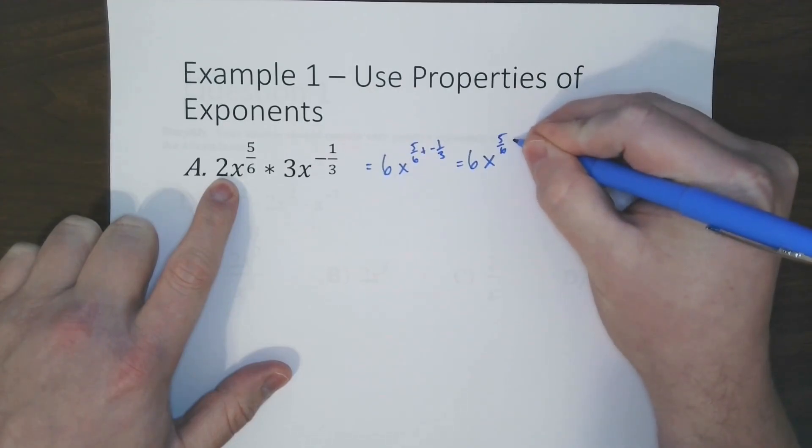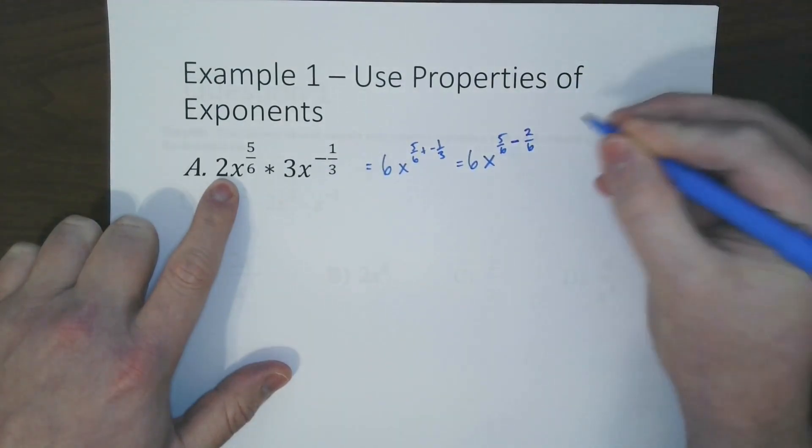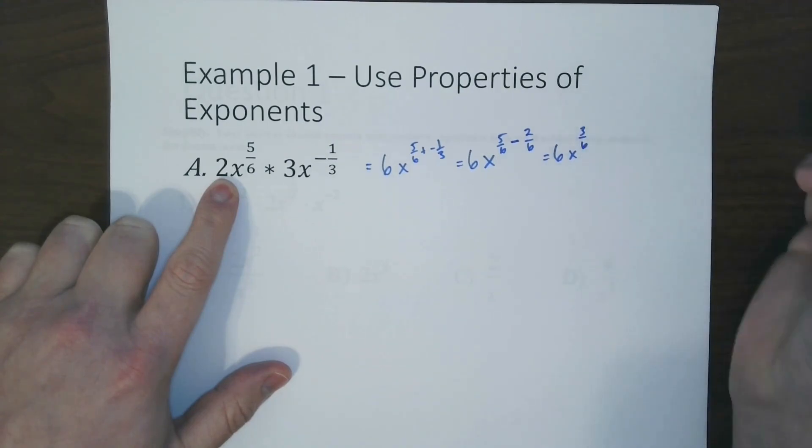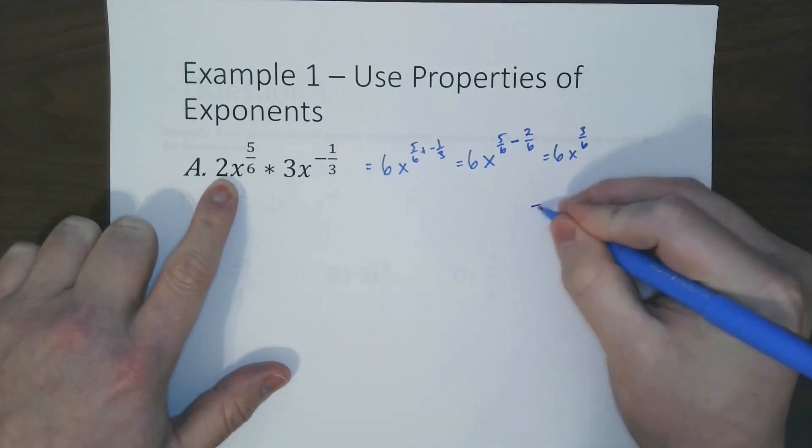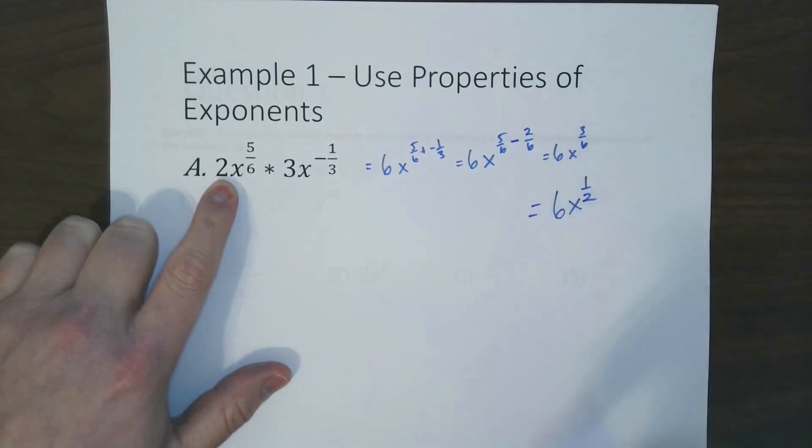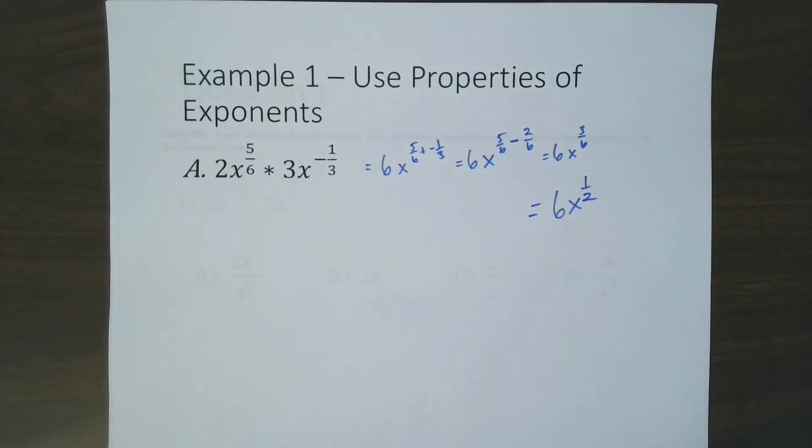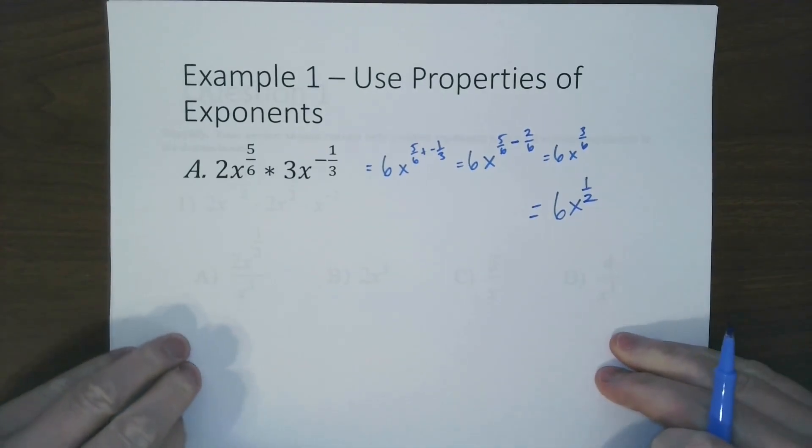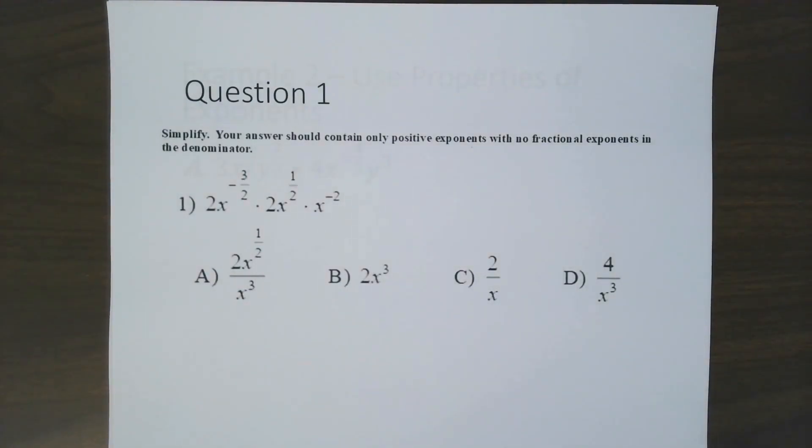which in turn becomes 5/6 minus 2/6, which ends up becoming 3/6, so our final answer will be 6x to the 1/2. Go ahead and try this problem.